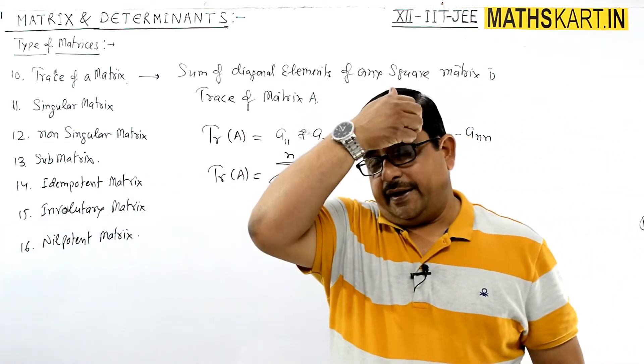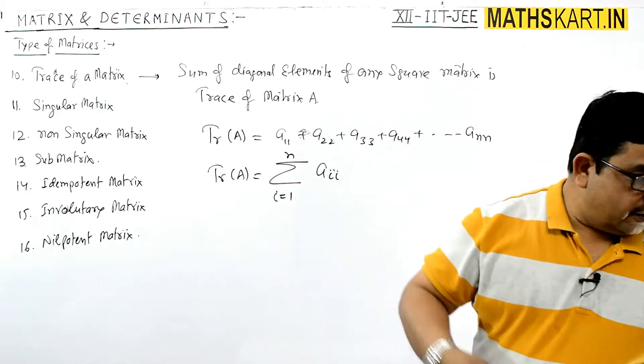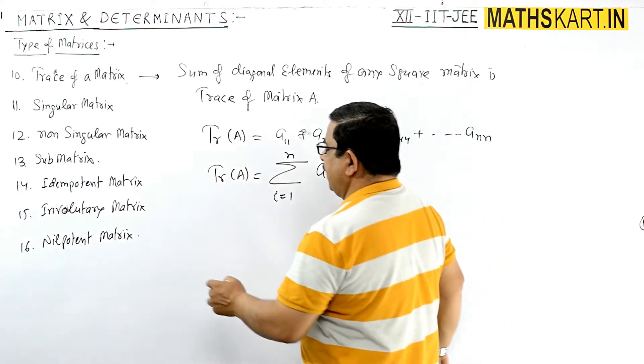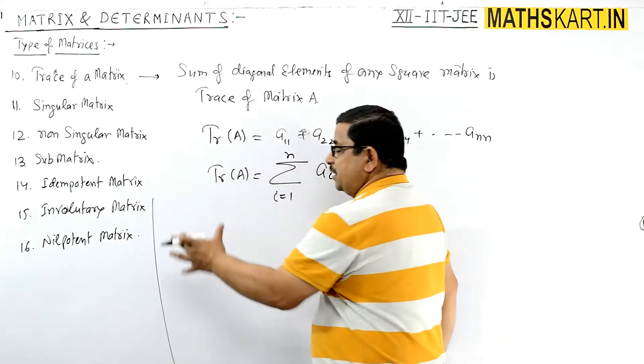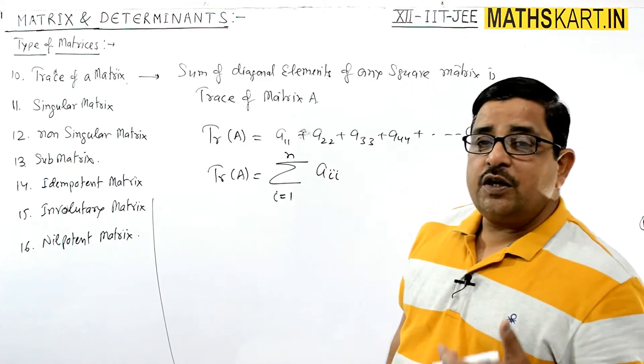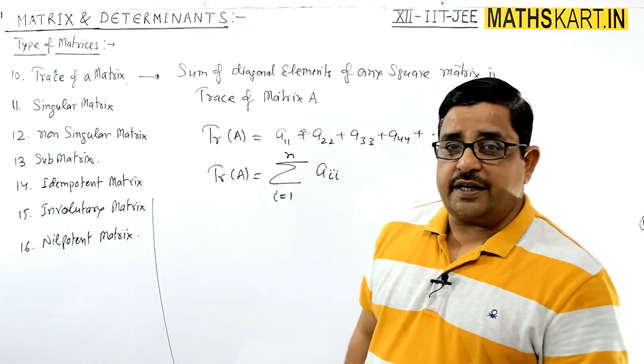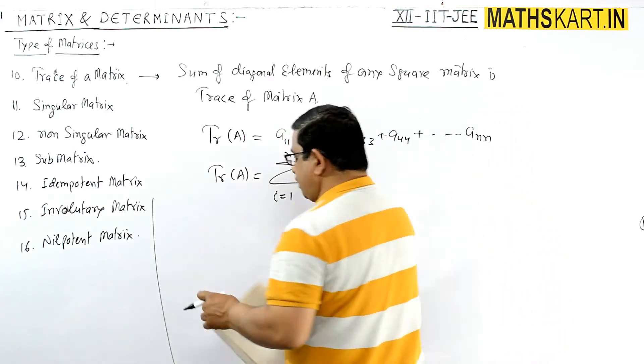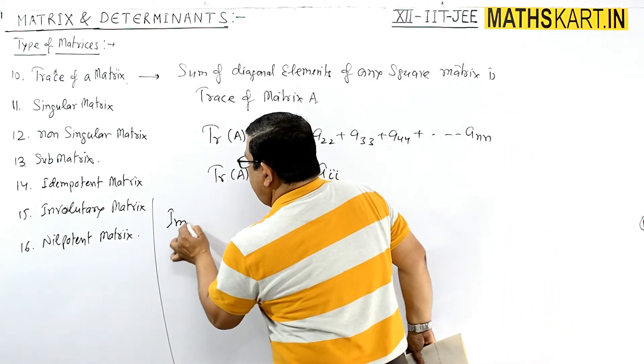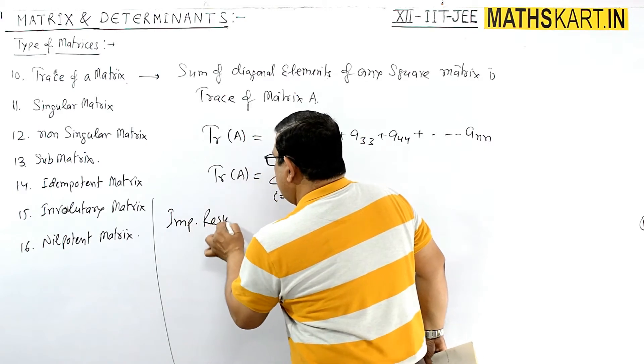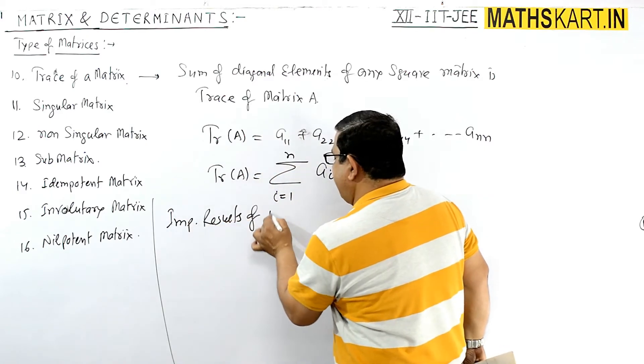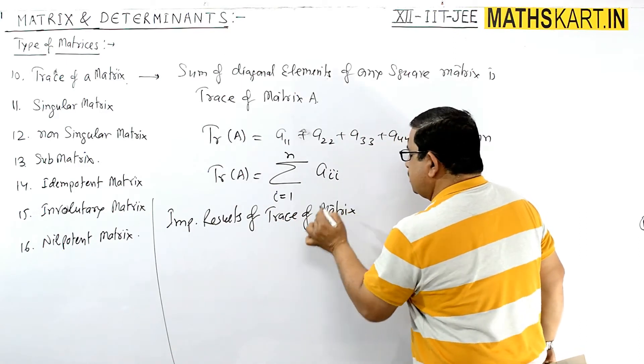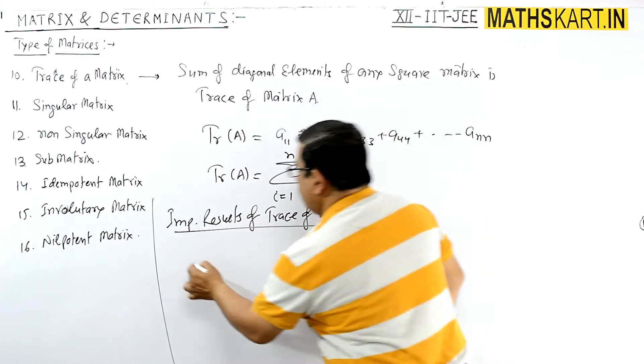So this one can also be represented, and this is known as the trace of any matrix A. So some important results and properties of trace of matrices.